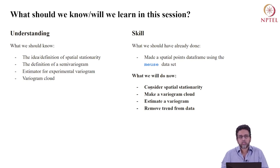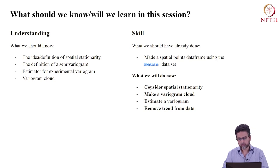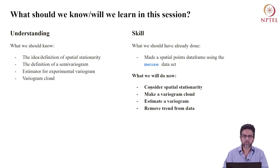In terms of programming prerequisites, you should already know how to make a spatial points data frame using the Muse dataset and how to prepare spatial data for spatial analysis. If you don't know that, please review the earlier sessions. What we will do now is take a moment to look at our data, think about whether spatial stationarity is a reasonable decision, and then go through the process of actually estimating our variogram. We will also talk briefly about trends and how to remove them from the data and why we should.